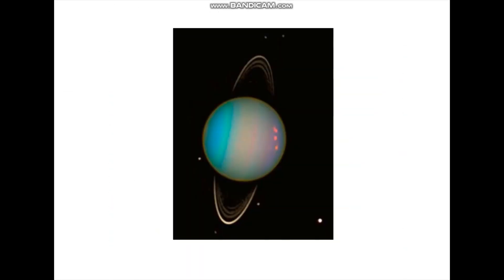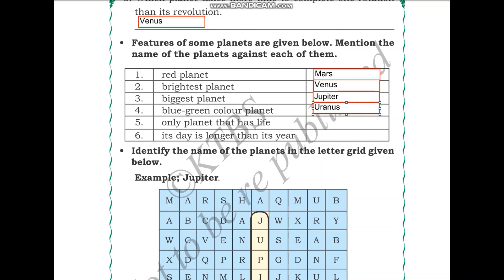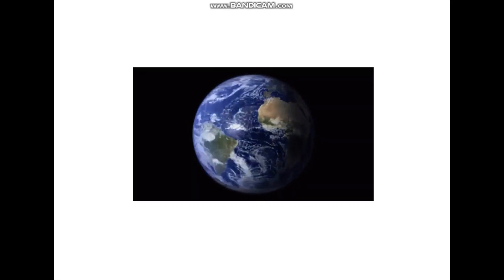Which is the only planet that has life? As we all know, Earth is the only planet that has life. Earth is the only planet in the solar system that has life.